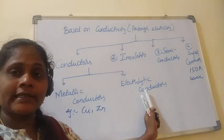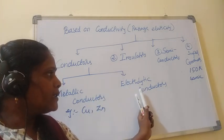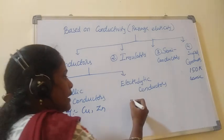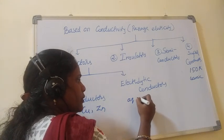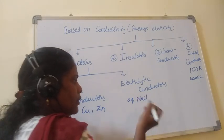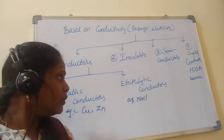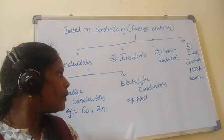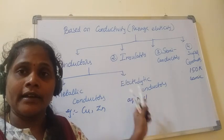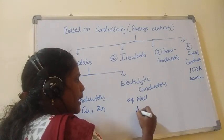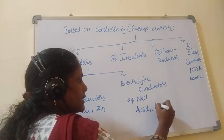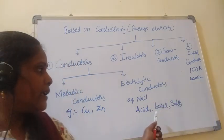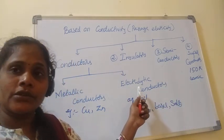And electrolytic conductors are aqueous solutions or fused-state substances — such as aqueous solution of NaCl, aqueous solution of KCl — which also show passage of electricity through them. Therefore they are called electrolytic conductors. The best examples are acids, bases, and salts, which all show conductivity. Those are called electrolytic conductors.